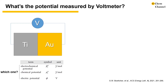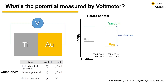The first example they used to illustrate potential concepts is voltage measurement by a voltmeter. If we put a piece of titanium and a piece of gold together and measure the voltage across the interface, what is the potential we measure? Is it electrochemical potential, chemical potential, or electric potential? To better describe the system, they introduce work function,